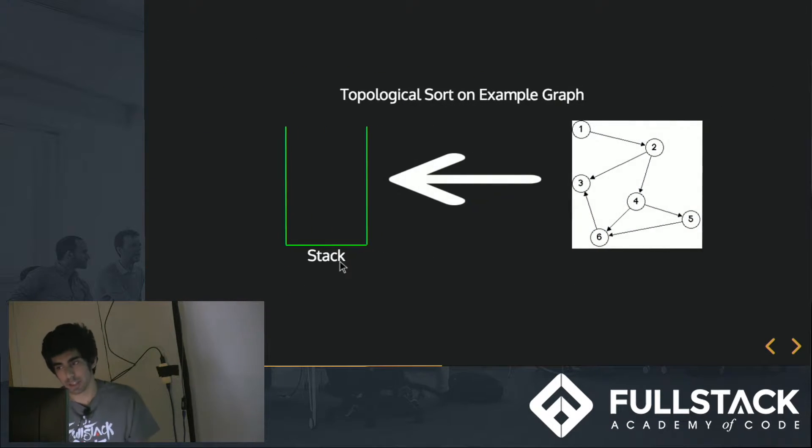So here's a visualization. So I can start with any node, such as 1, and 1 has a dependency of 2, 2 has a dependency of 4, 4 has a dependency of 5, 5 has a dependency of 6, and 6 has a dependency of 3. And 3 is a node with no more dependencies on it, so we can add it to the stack.